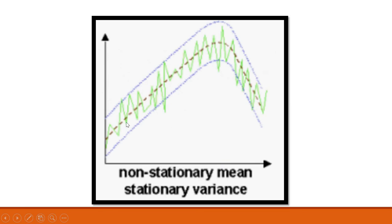Now let's see this diagram. In this diagram you will see that the mean line is increasing — this line is our mean and it is increasing, so the mean is not constant. It is increasing and decreasing, so it is a non-stationary mean. But if you look at the difference between the two control lines, that variance change is the same at the starting point as at all different points. So there is a constant variance. In this data, it is a non-stationary mean but a stationary variance.